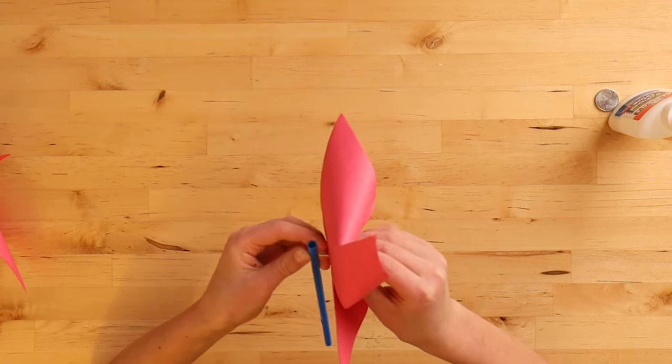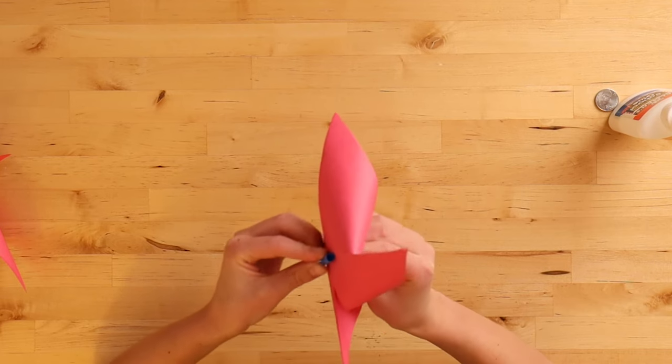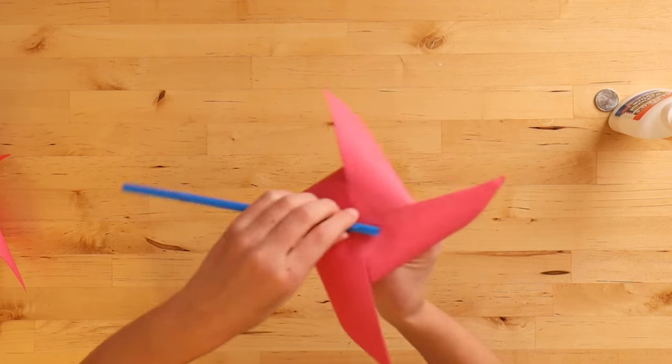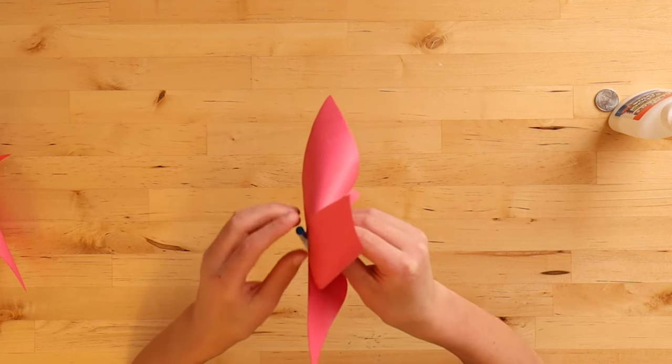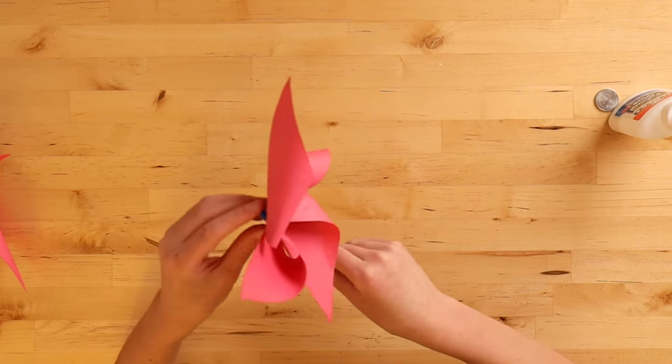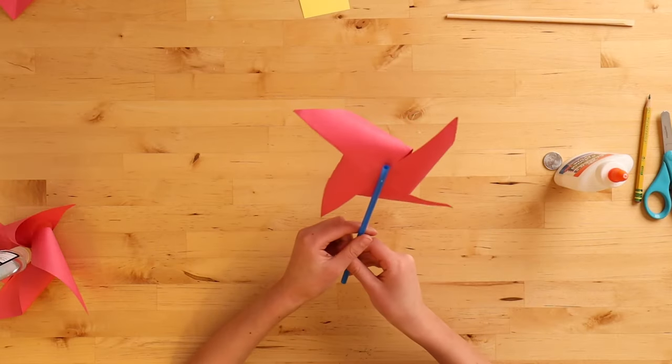You want to get your straw. You want to poke your thumbtack into the straw all the way to the other side. You want to have a little bit of space between the straw and your pinwheel just so that it can spin correctly. So now you've got your pinwheel.